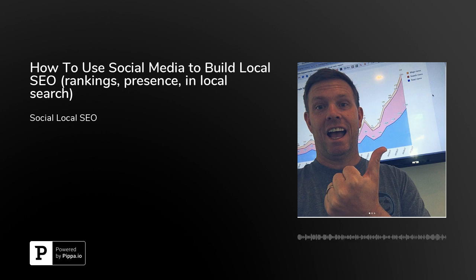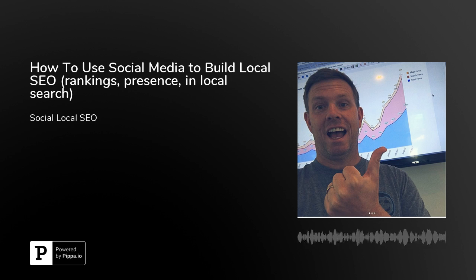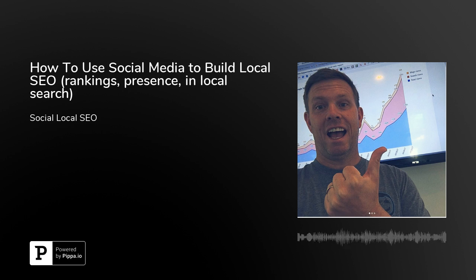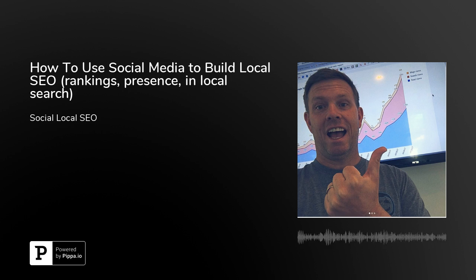So I want to talk about how we — and this is very simple — use social media to increase location authority for your local business. There are three main social platforms that we do this with: Facebook, Twitter, and Instagram. Those are the three main social platforms we use for this strategy.